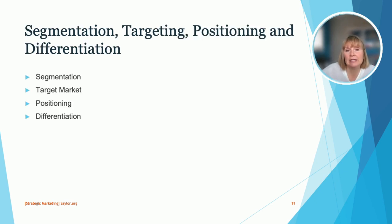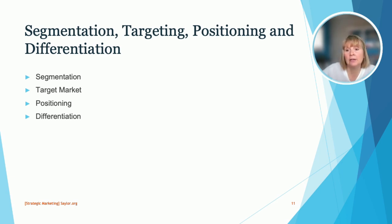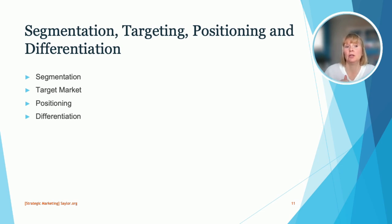Now we have segmentation, targeting, positioning, and differentiation. In addition to the four P's, you're also going to consider segmentation, your target market, positioning of a product, and how you might differentiate that product from others on the market. When you understand these four areas, you can better develop your strategic marketing plan to focus on who you're selling to — your target market — and then how you intend to reach that market. It helps you think through the process of 'here's where I want to be, and how do I get there?'